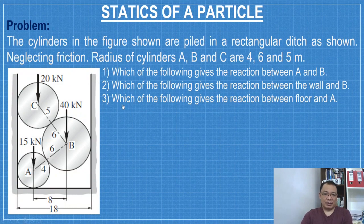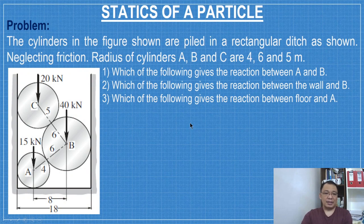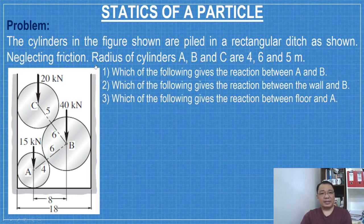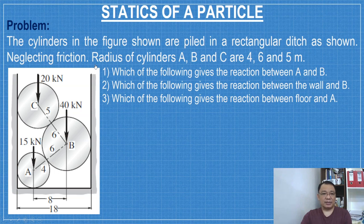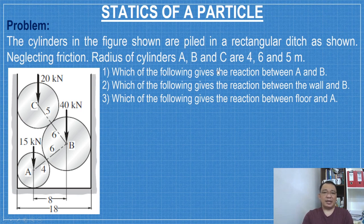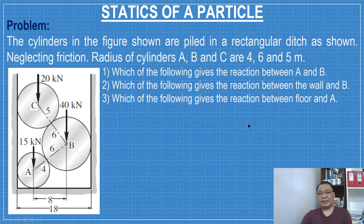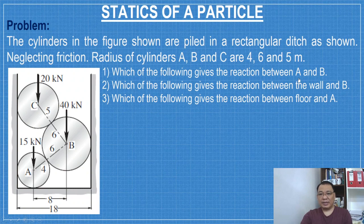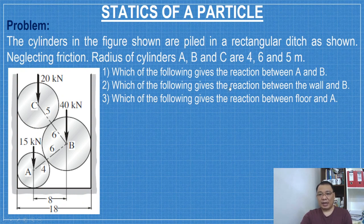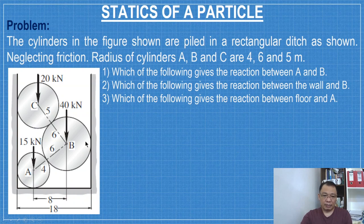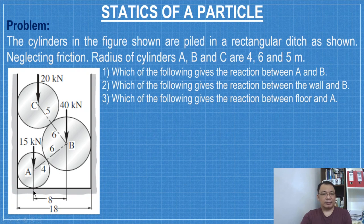Another one, another board exam problem, similar but different arrangement. And then with different radii. The cylinders in the figure shown are piled in a rectangular ditch as shown. Neglecting friction. Radius of cylinders A, B, and C are 4, 6, and 5 meters. Which of the following gives the reaction between A and B? Number two, which of the following gives the reaction between the wall and B? This one. And then number three, which of the following gives the reaction between the floor and A?